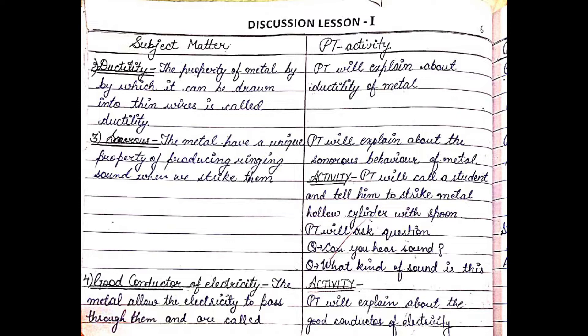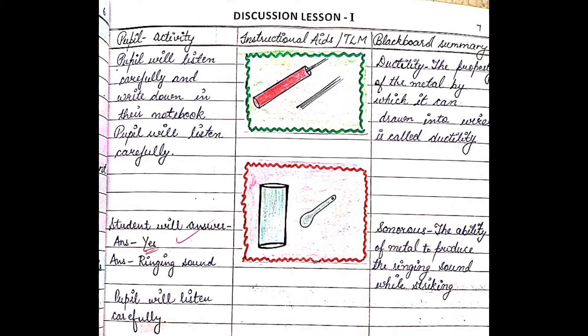Then I have explained another important physical property of metal — that is sonorous — with the help of an activity. I called a student and asked him to strike the metal on a cylinder with the help of a spoon, and then asked a few questions related to that activity.